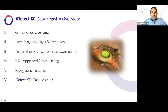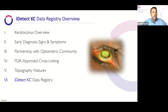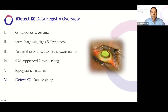Here's kind of the lay of the land tonight. We are going to define keratoconus, give you an overview of what the patient type looks like, and go into early diagnosis. How do we make that early diagnosis as part of 2020 keratoconus management? How do we as eye care providers stop or halt this irreversible cause of vision loss and blindness? We'll give you a few pearls on interventional approaches, talk about FDA-approved corneal collagen crosslinking, and introduce the iDetect KC data registry, a partnership between TopCon and Glaucos targeted at primary optometrists.